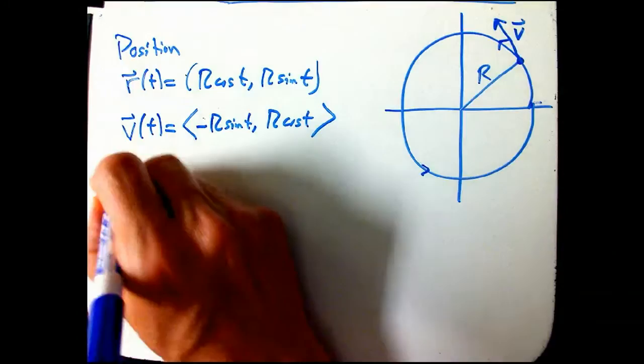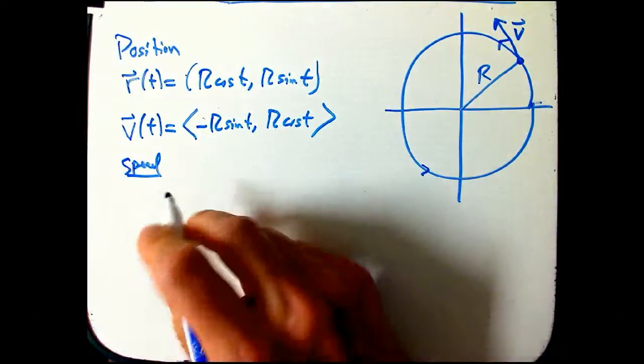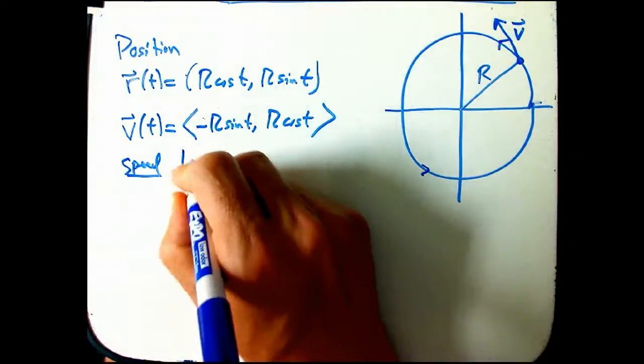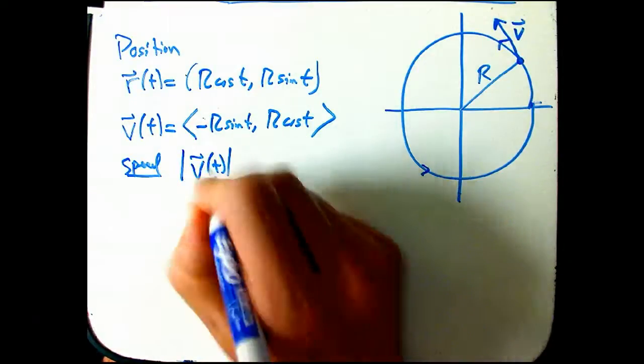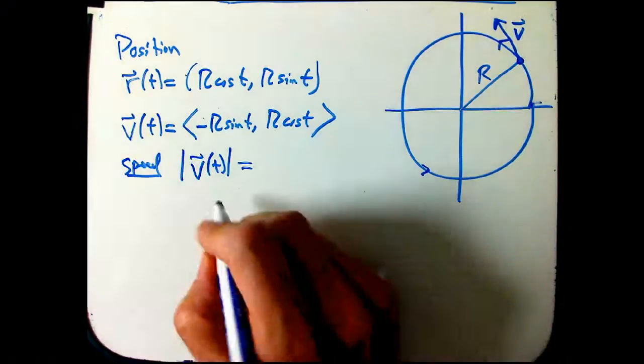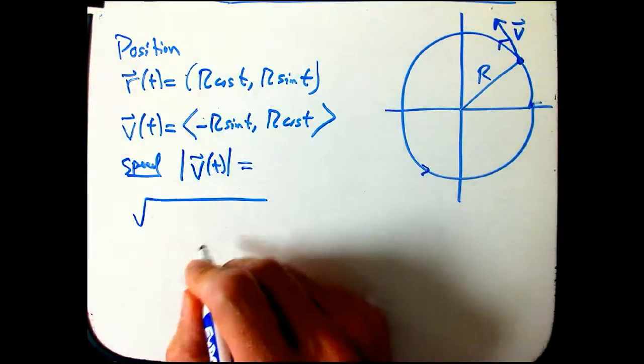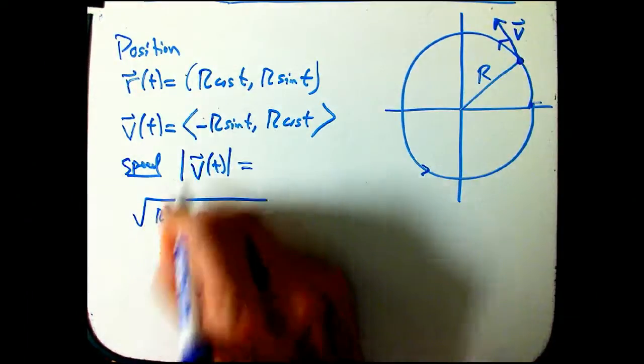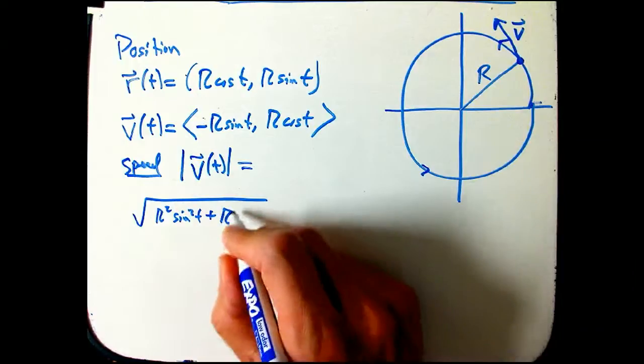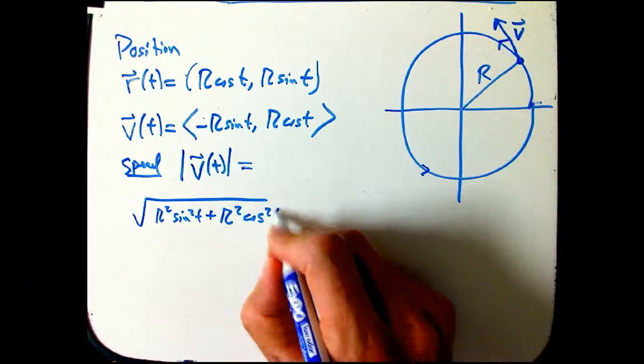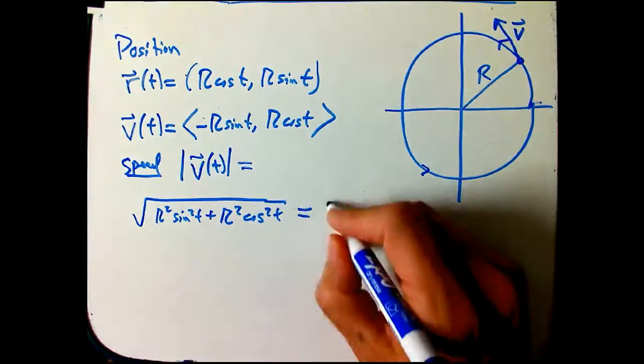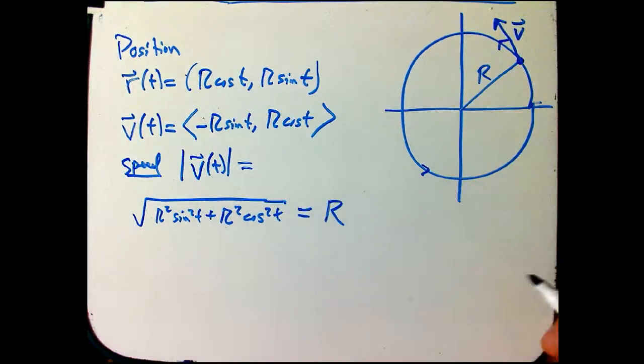So I want to talk about the speed of that particle. The speed is just the magnitude of the velocity. So that's pretty easy. There's not really a separate notation people usually use for speed. So sometimes I just write it out as a word and sometimes I just give it as magnitude of velocity. The minus sign always squares away, so don't even write it. r² sin²t + r² cos²t. And of course, sin² + cos² = 1. So you get the square root of r². r is a positive number, so that's just r.